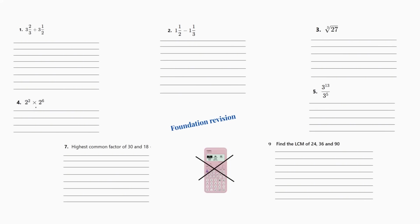You've got to make the denominators the same with this question. First, we'll take it out of the mixed number. We do this by multiplying the whole number by the denominator and then adding the numerator. So three times three is nine, plus the two is eleven — we now have eleven over three. Same again: two times three is six, plus the one is seven — so seven over two.